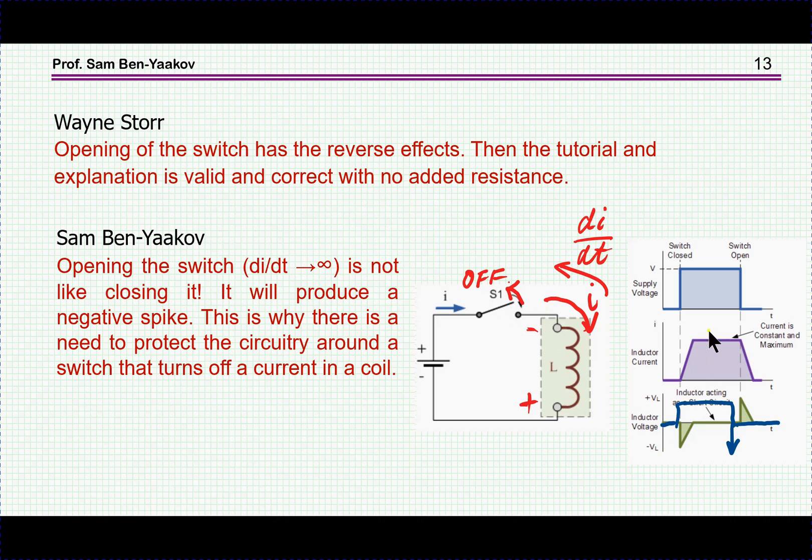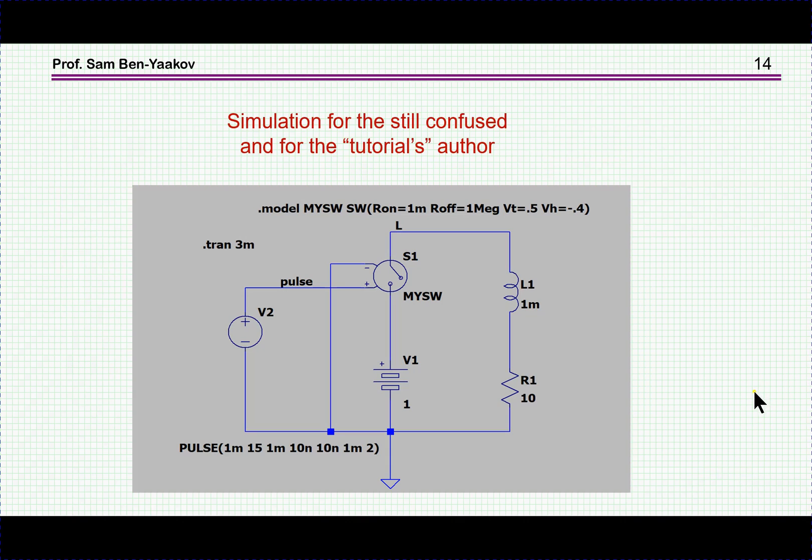Well, he says that when you open the switch and if there is a current you'll see a decrease like this. This is of course a major error. If you interrupt the current, you're going to have a voltage spike and the current will go down immediately. So for those still confused, and as a lesson to the author of this tutorial, Mr. Wayne Storr, here is a simulation of the situation from which one can see very clearly what is happening.